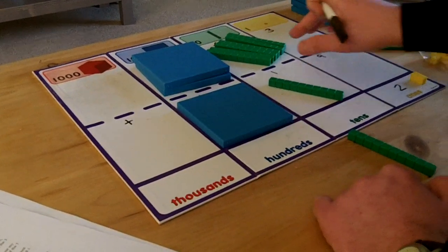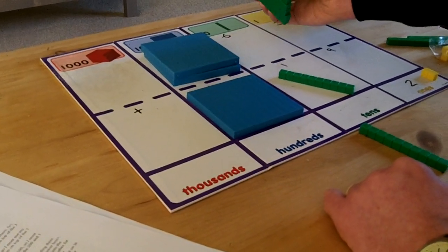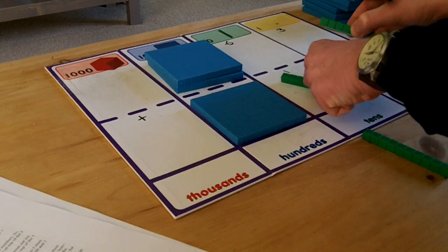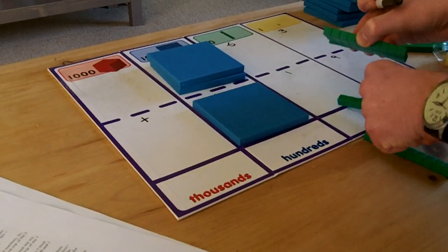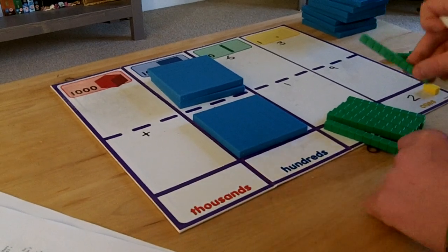Now I must add the tens column, the 6 rows of 10 blocks here onto the 1 row of 10 blocks here. Add those together with the 1 row of 10 that was left over from before.